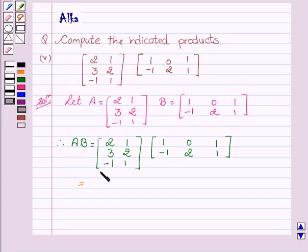So this is equal to 2 into 1 plus 1 into minus 1, then 2 into 0 plus 1 into 2, then 2 into 1 plus 1 into 1.